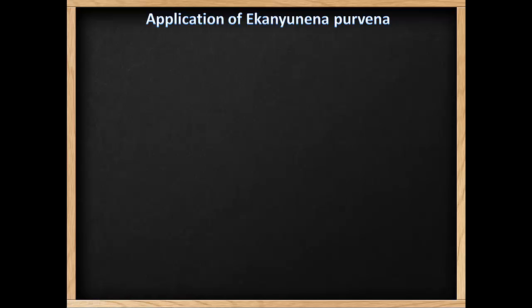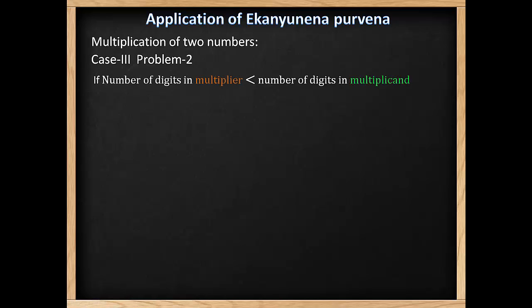Let us do one more problem on this case, when the number of digits in the multiplier is less than the number of digits in the multiplicand, like 512 times 99. You can see 512 has 3 digits but 99 contains only 2 digits.